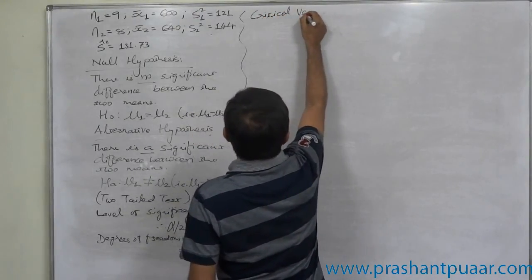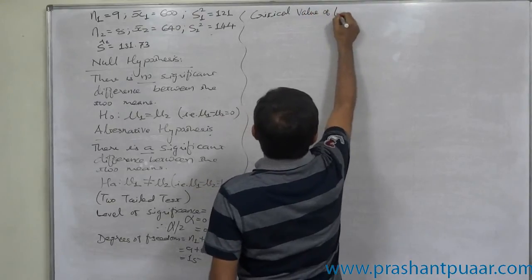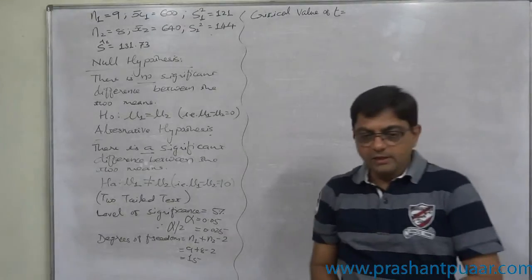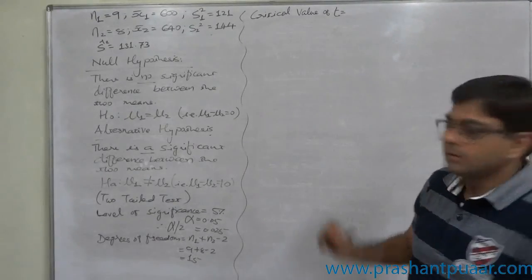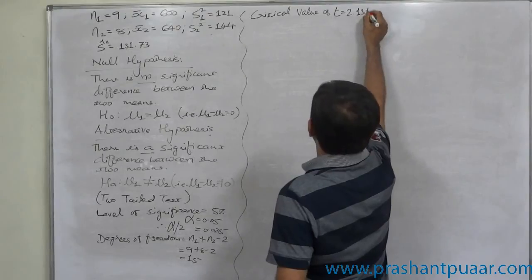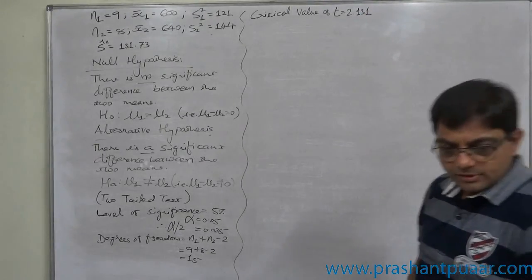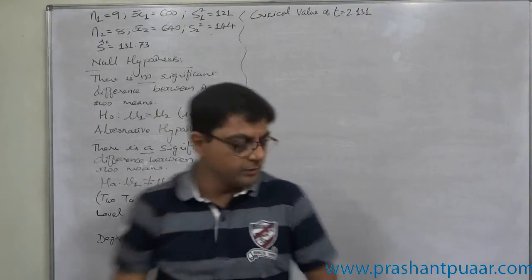Critical value of t for df of 15: 2.131.